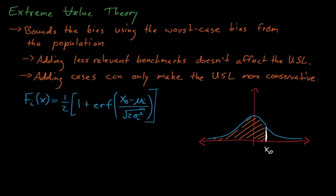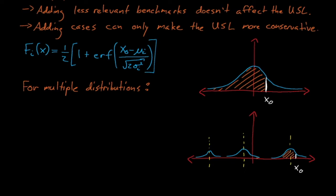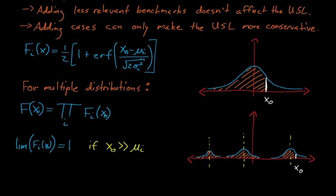If we then consider multiple critical experiments, each described by their own bias distribution, then the probability that our randomly sampled bias will be less than some x0 is equal to the product of the F sub i functions for each distribution that we consider. x0 is so far to the right of two of the three distributions here that it is virtually guaranteed that these two distributions will not produce a bias that is greater than x0, meaning that the value of F of i for these distributions is approximately equal to 1.